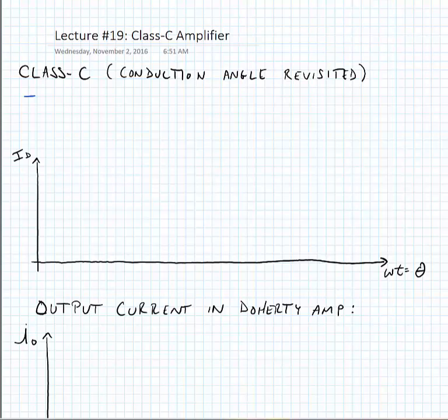So the Class-C amplifier is a linear amplifier, and that doesn't necessarily mean that its output is linear with respect to the input. It just means that the transistor acts as a current source for some part of the conduction cycle.